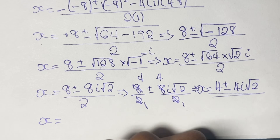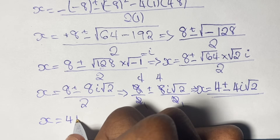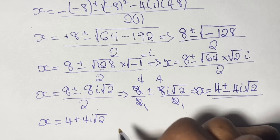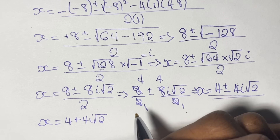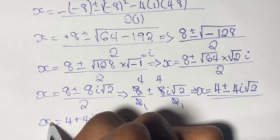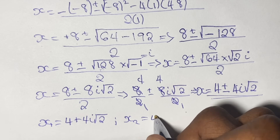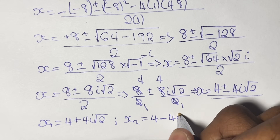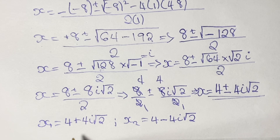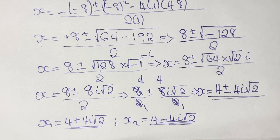So our first solution for x is x₁ equals 4 plus 4i times the square root of 2, and our second solution is x₂ equals 4 minus 4i times the square root of 2. These are our complex solutions for x.